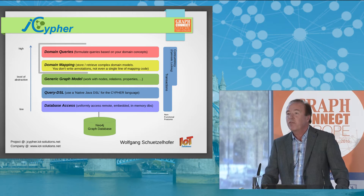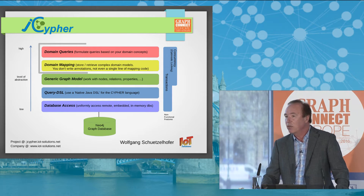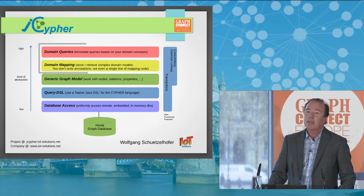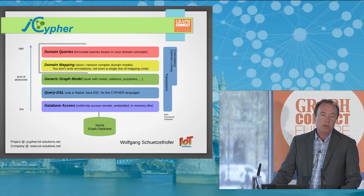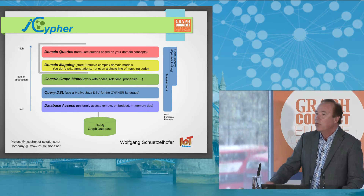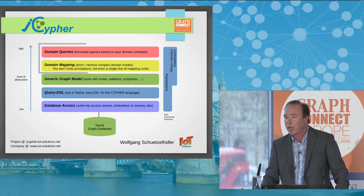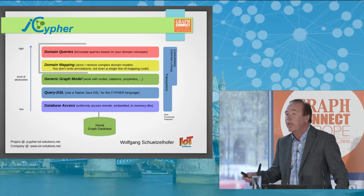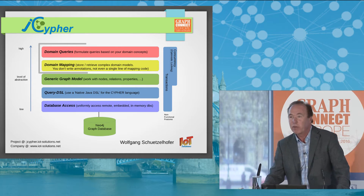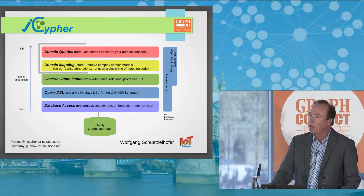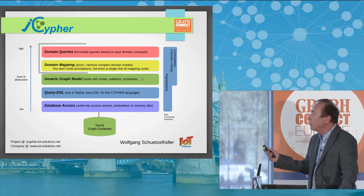You don't need to modify your objects or their classes in any way. You don't add annotations. And as jCypher provides a default mapping, you don't need to write a single line of mapping code or mapping configuration. At that same level of abstraction, you want to be able to query your graph of domain objects. For that, jCypher provides another Java DSL called domain query language, which allows you to formulate queries based on concepts of your domain model rather than on concepts of the underlying graph model.